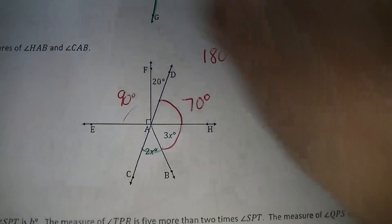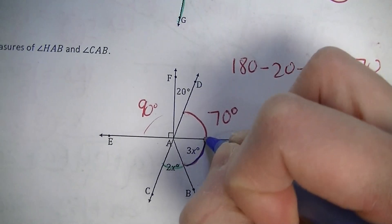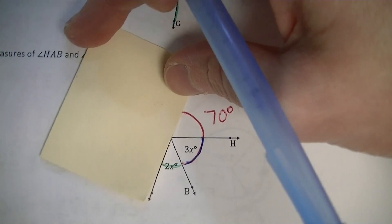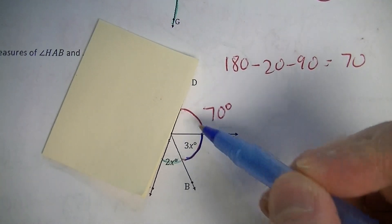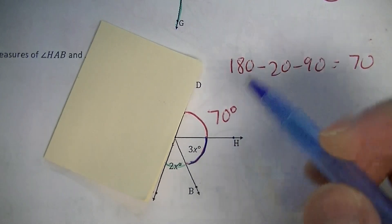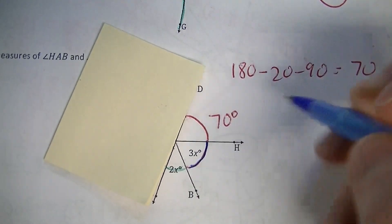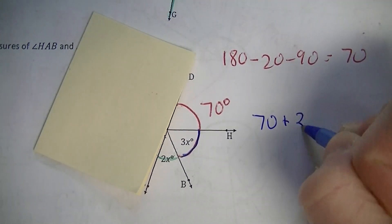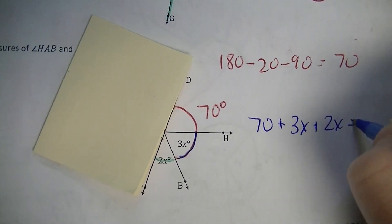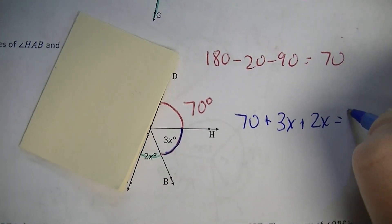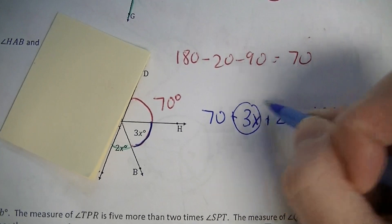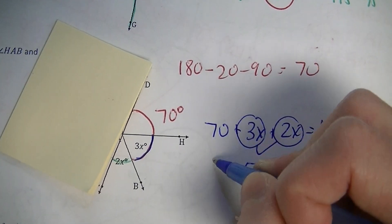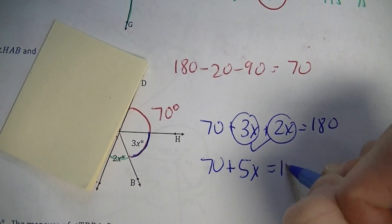Now I'm going to use that to figure out the measurement of this angle. But first I need to find the value of x. Those three angles are all angles on a line, so I'm going to set up an equation: 70 plus 3x plus 2x, and they would have a sum of 180 degrees because they're angles on a line. Simplifying, 3x plus 2x is 5x. So we have 5x plus 70 equals 180.